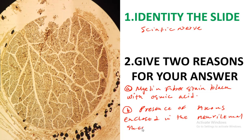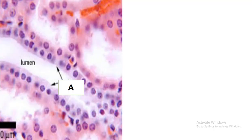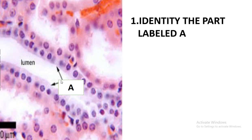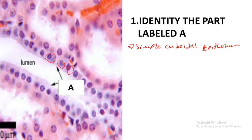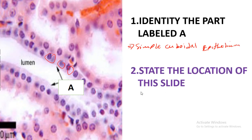That is a very important point you need to take note of. The next slide question asks you to identify the part labeled A. That region is just simple cuboidal epithelium, and this is likely to be that of a kidney. The location of this slide is specifically the renal tubules, in case you want to be that specific.